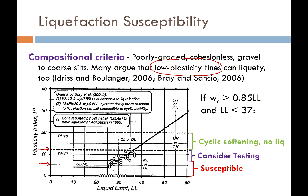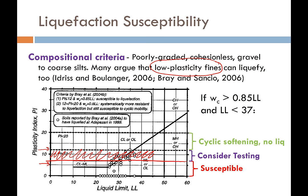There's a lot of argument between these two camps — is the plasticity index threshold 12 or 7? What has been decided is that if your soil falls within the range between a plasticity index of 7 and 12, you should consider testing it in the laboratory to see if under the design ground motions anticipated for your site, it will liquefy.